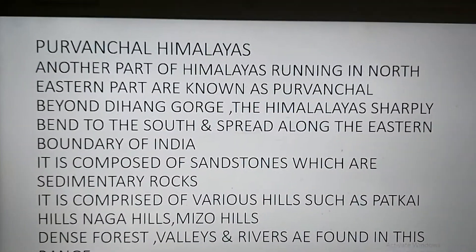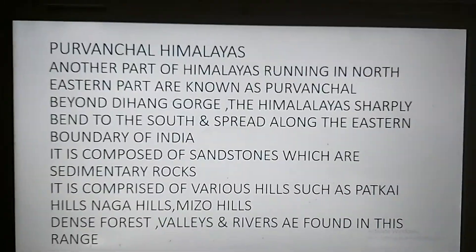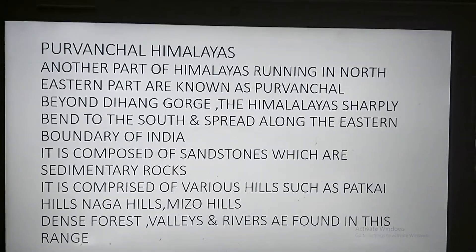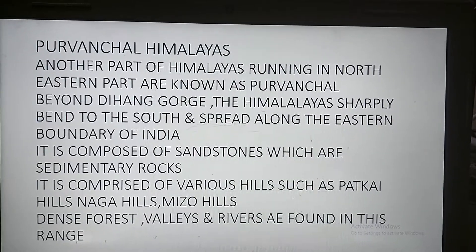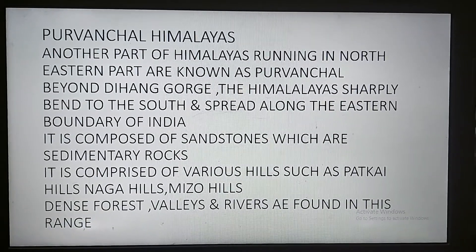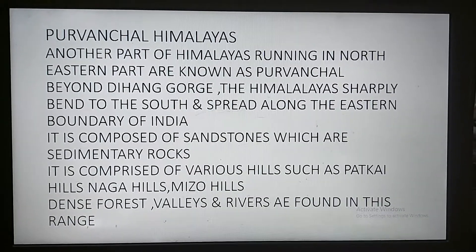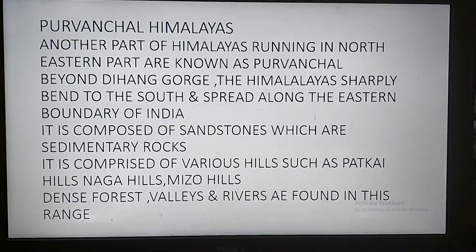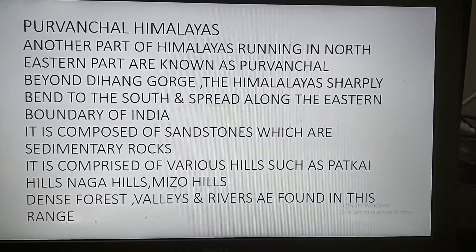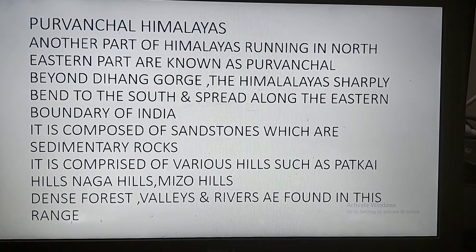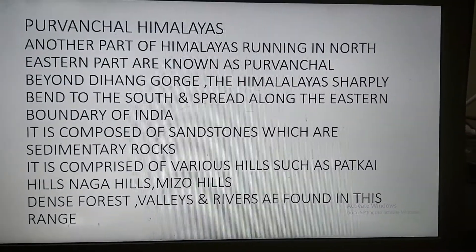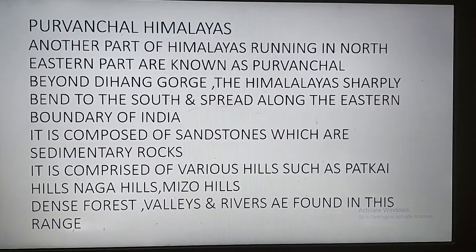Let us revise Purvanchal. These are another part of the Himalayas running in the northeast, known as Purvanchal. Beyond the Dihang Gorge, the Himalayas sharply bend to the south and spread along the eastern boundary of India. It is composed of sandstone — sedimentary rocks — and has various hills like Patkai Hills, Naga Hills, and Mizo Hills. Because of the sedimentary rocks, there is good vegetation, dense forests, valleys, and rivers are found in this range. The hills here have a height of around 4,000 to 5,000 meters.